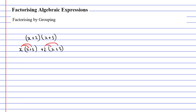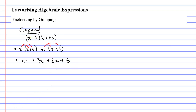x times x gives us x squared. x times positive three gives us plus three x. Positive two times x gives us plus two x. And positive two times positive three gives us plus six. Now usually I get you to combine the like terms in the middle, but I don't want you to do it this time, because we actually want an expression with four terms — one, two, three, four terms. This is an example of expanding. So what would you do if it involved factorizing by grouping?